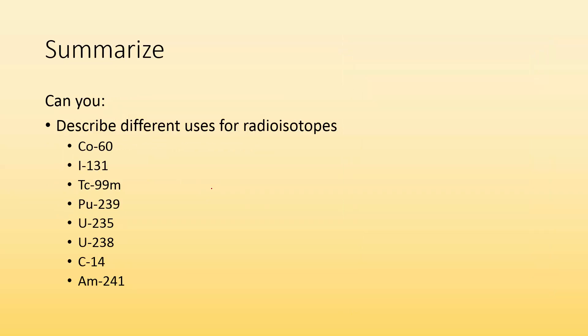So to summarize, can you describe the different uses for radioisotopes, including cobalt-60, iodine-131, technetium-99, plutonium-239, uranium-235, uranium-238, carbon-14, and americium-241? I hope so. And if not, watch it again, take some notes. I'll see you in class. Bye.